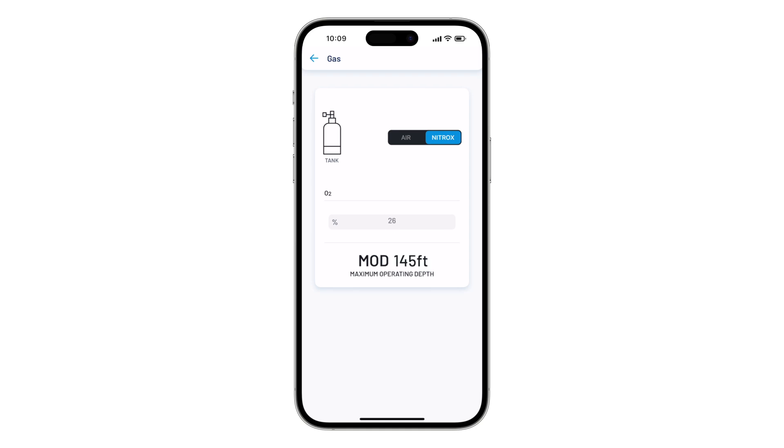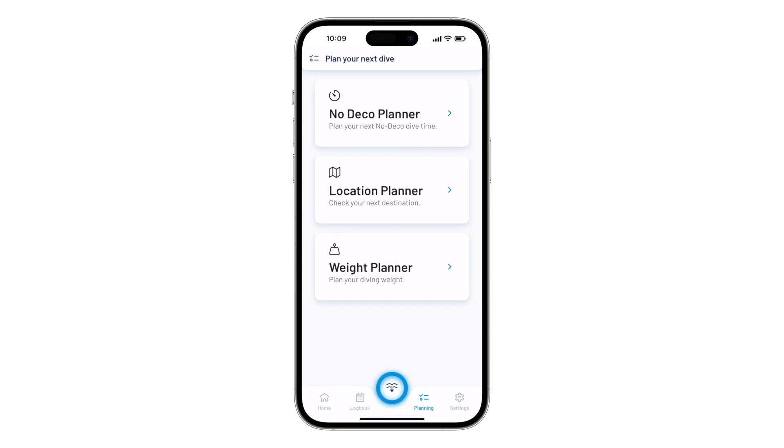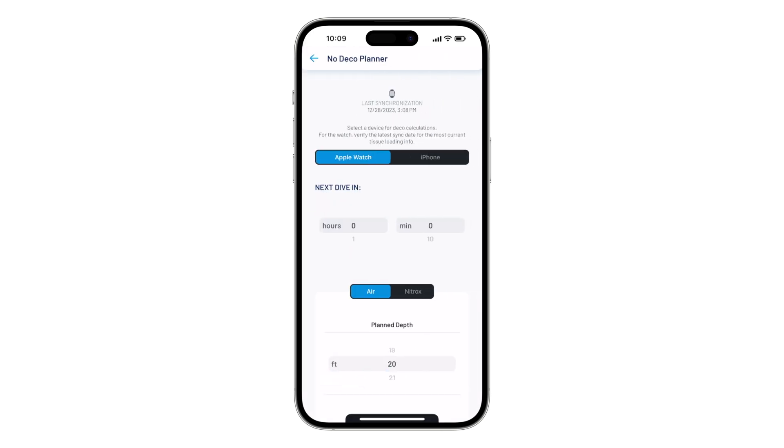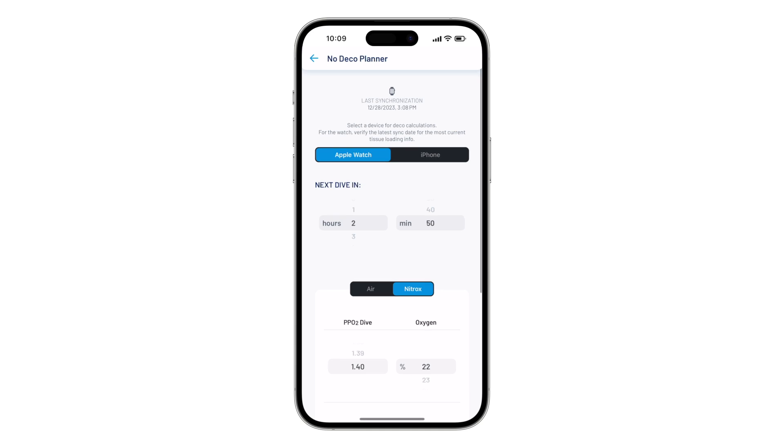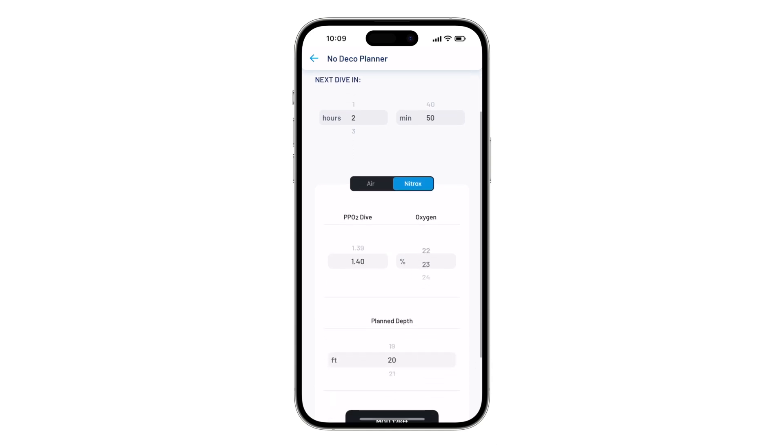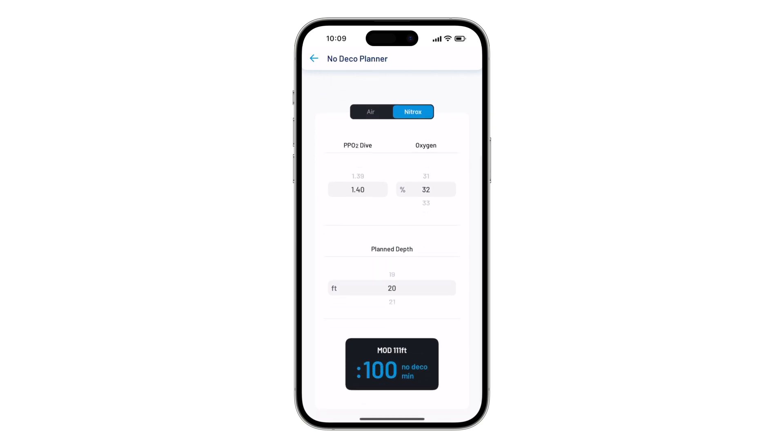Next, you can plan your dive time and maximum depth using the no deco planner. Here you can enter when your next dive is expected. The gas mix used, in this case, will select nitrox 32%. Notice the MOD, max operational depth, of the gas displayed is 111 feet. By entering how deep our dive will be, you can see the resulting no deco time. The default max ppo2 for your dive is 1.4.